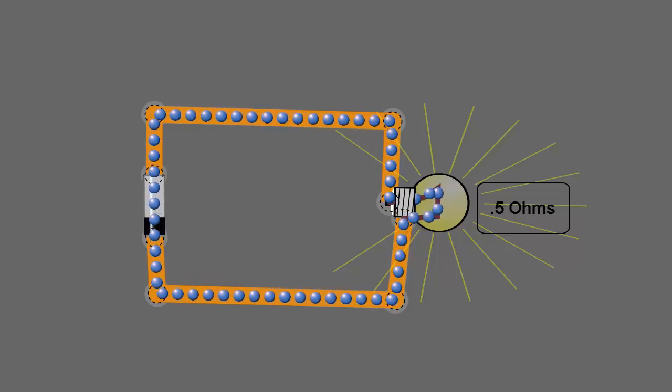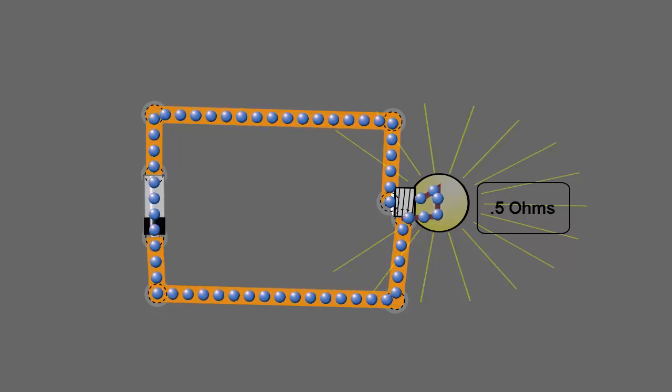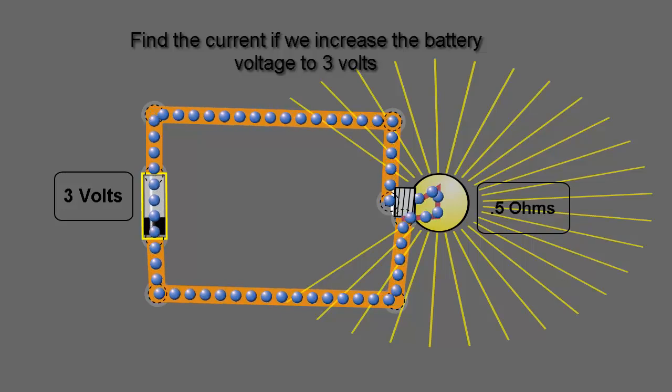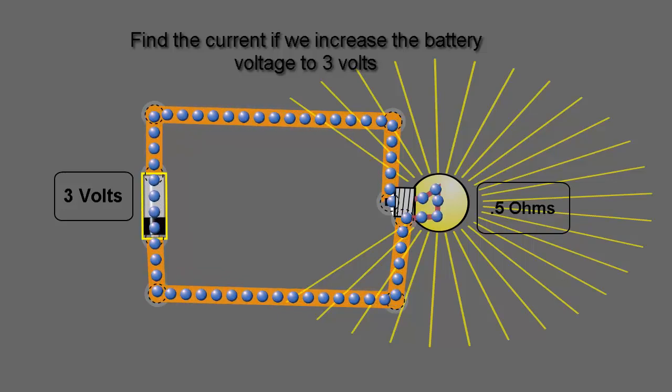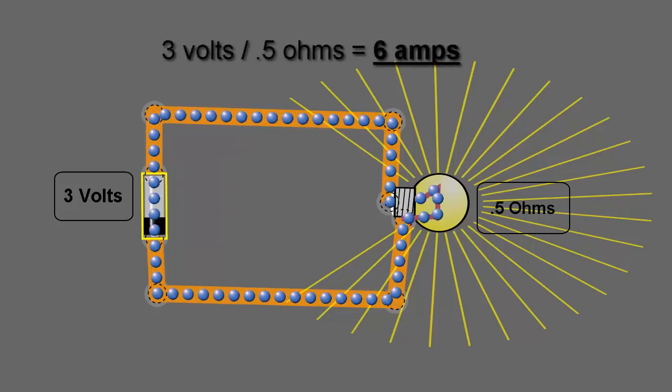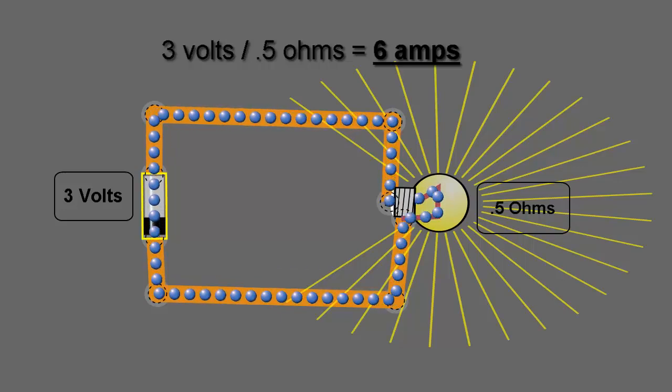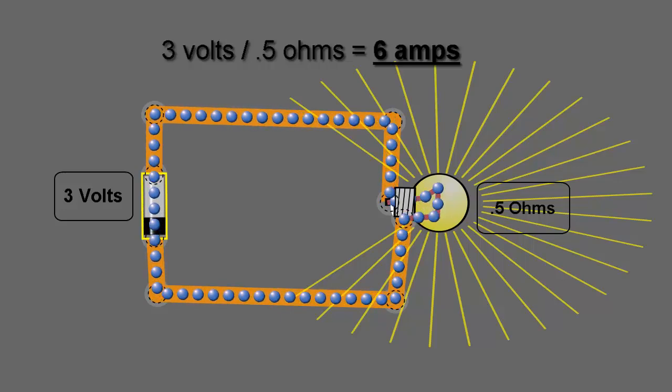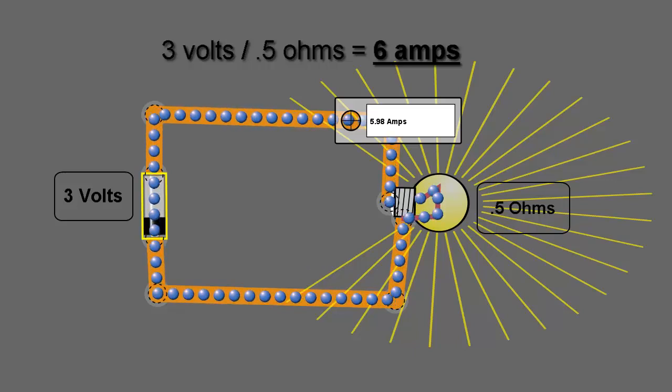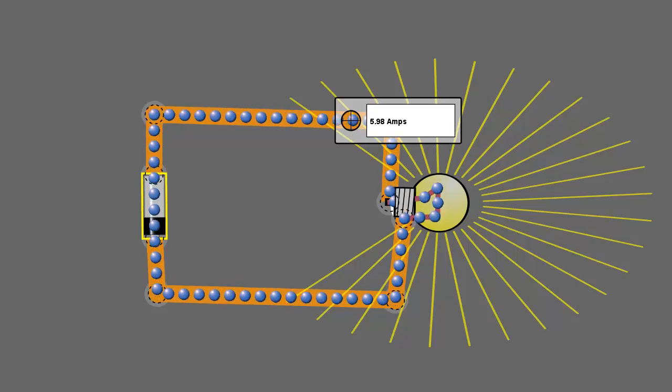Now what would happen if we increase... we already discovered that if we increase the resistance of the circuit, we decrease the current. The question is, what happens if we increase the battery voltage? Well, let's try it. Let's change the battery voltage to 3 volts. Okay, so I've changed the battery voltage to 3 volts, and we can see that the bulb is a lot brighter now. And the question is, how much current do we have now? We have 3 volts and our bulb resistance is 0.5 ohms, so our current should be 3 volts divided by 0.5 ohms, which should be 6 amps. So let's measure it and see what we come up with. Okay, so when we actually measure the current, the simulator tells us that the current is actually 5.98 amps, or 6 amps. So Ohm's law works.